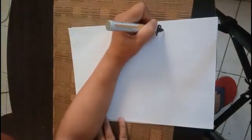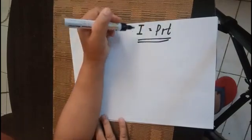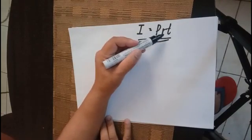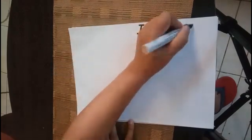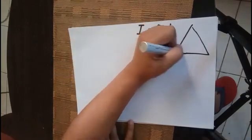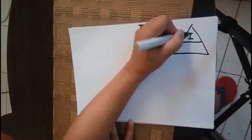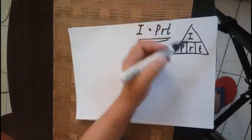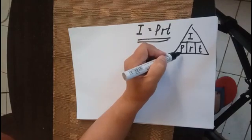What if the missing value is not interest, but instead the principal, the rate, or the time? This is the original formula for missing interest, but if the missing one is either the principal, the rate, or the time, this is what you are going to do. Interest should always be at the top — part of your numerator — with principal, rate, and time below.